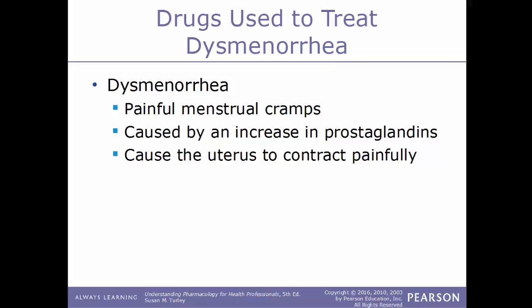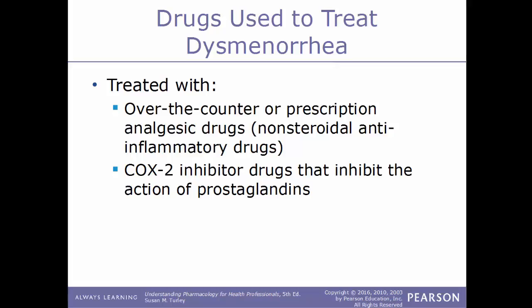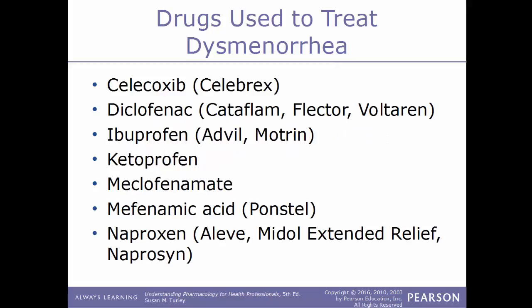Dysmenorrhea is having painful menstrual cramps, caused by an increase in prostaglandins that cause the uterus to contract very painfully. This condition is treated with either over-the-counter or prescription analgesic drugs such as NSAIDs, or COX-2 inhibitor drugs that inhibit the action of prostaglandins. Examples include celecoxib (Celebrex), diclofenac (Cataflam, Flector, Voltaren), ibuprofen (Advil, Motrin), ketoprofen, meclofenamate, mefenamic acid (Ponstel), and naproxen (Aleve, Midol Extended Relief).